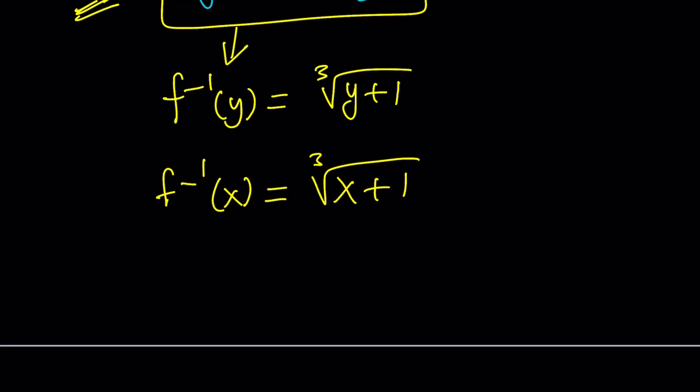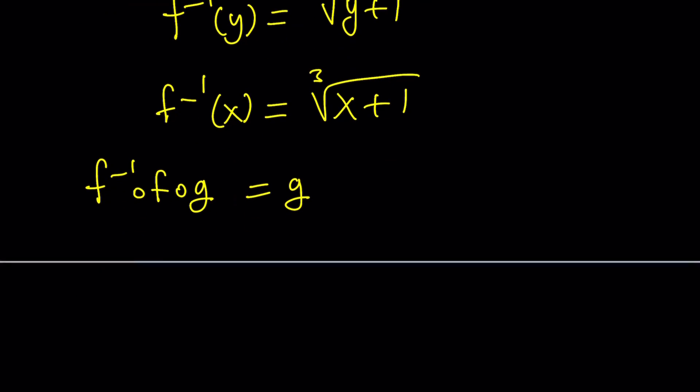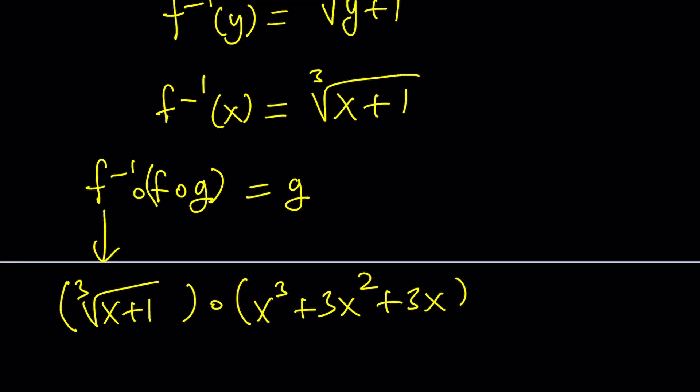And what are we going to do? Remember, f inverse composed with f of g is going to give us g. Remember that? Because f inverse and f cancel out. So this is f inverse and we do know what f of g is. So our goal is going to be to compose these two functions. f inverse is cube root of x plus 1 and it's going to be composed with f of g, which is x cubed plus 3x squared plus 3x.